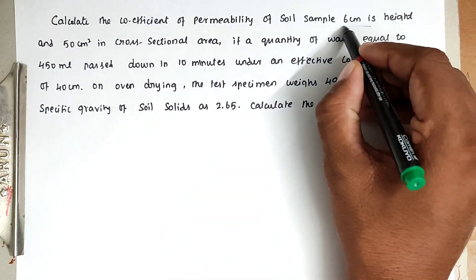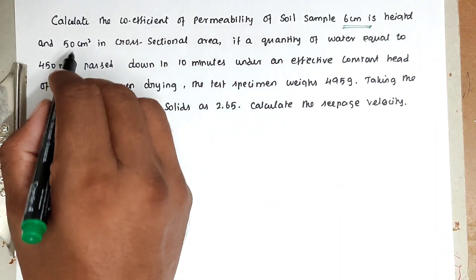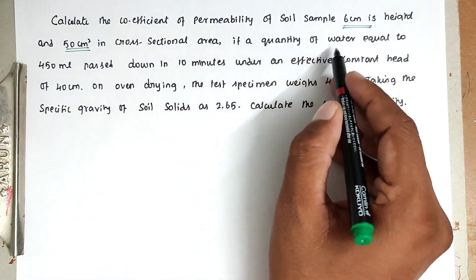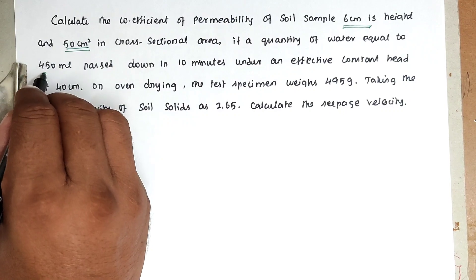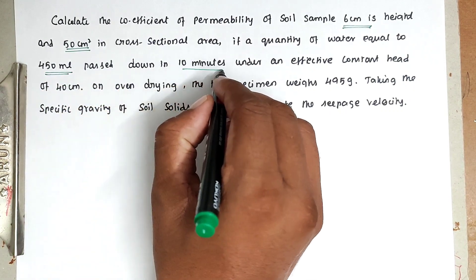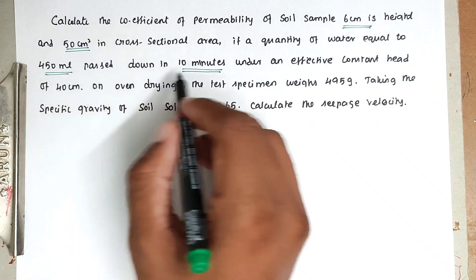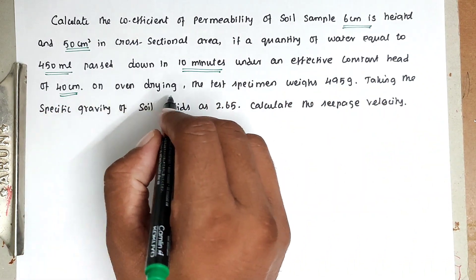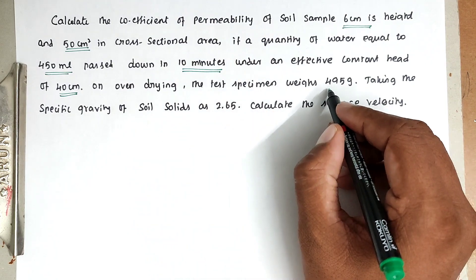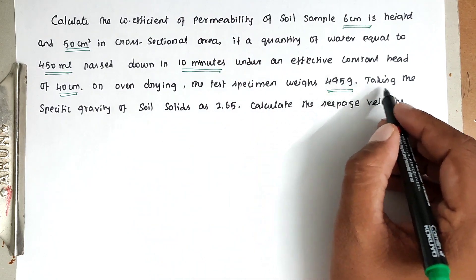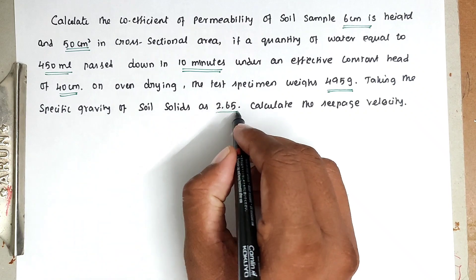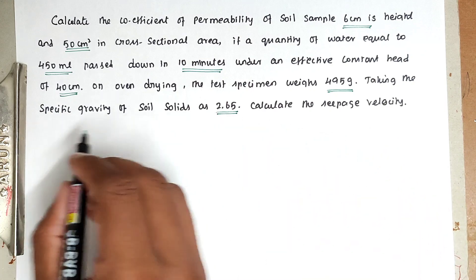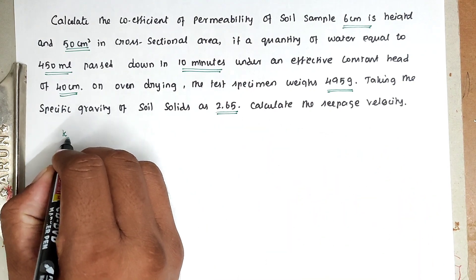The sample height is 6 centimeters and the cross-sectional area is 50 centimeter square. The quantity of water equal to 450 ml passes through in 10 minutes, under an effective constant head of 40 centimeters. On oven drying, the test specimen weighs 495 grams (dry weight), and the specific gravity of solids is 2.65.